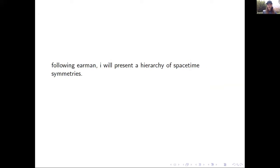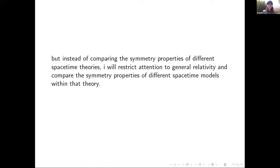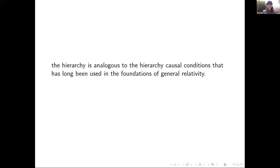Following Earman, I will present a hierarchy of spacetime symmetries today. But instead of comparing the symmetry properties of different spacetime theories, I'm going to restrict attention to general relativity and compare the symmetry properties of different spacetime models within that theory. The hierarchy turns out to be analogous to the hierarchy of causal conditions that's long been used in the foundations of general relativity, and I'm going to highlight a few connections between this symmetry hierarchy and a hierarchy of causal structure.